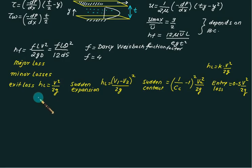We have a lot of minor losses: exit loss, sudden expansion loss, sudden contraction, entry loss. All these losses are expressed in terms of v²/(2g). Cc is called the coefficient of contraction.